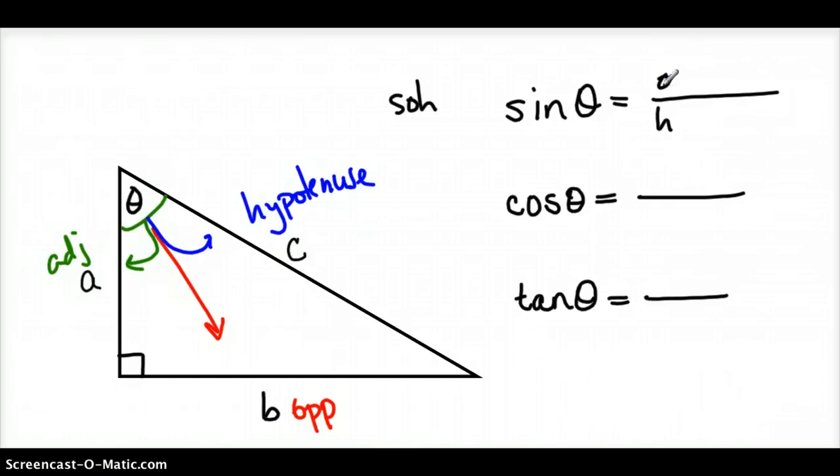Actually I shouldn't have written that there. I'm going to erase that, because that's just going to confuse us. My opposite side is B. And my hypotenuse side is C. And then here, for cosine, cosine equals CAH, adjacent over hypotenuse. So my adjacent is A, and my hypotenuse is C.